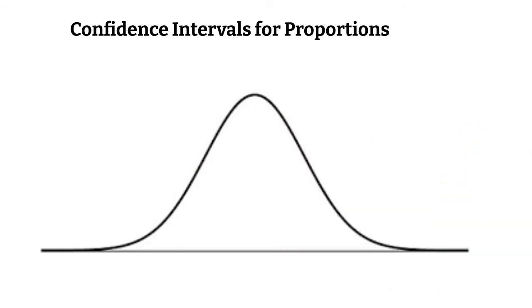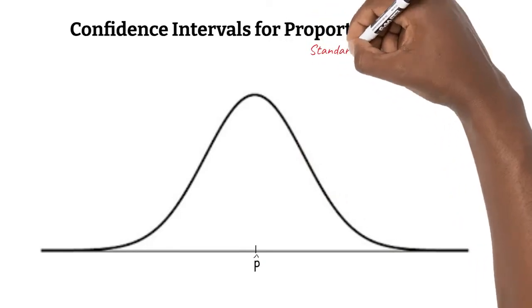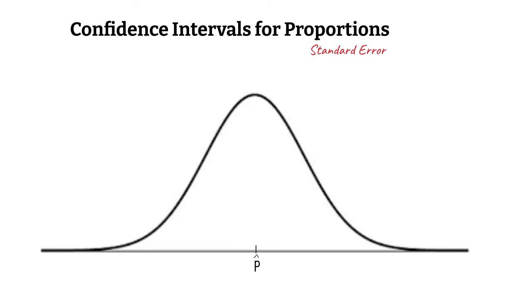Here's our normal curve. When we survey a sample, our proportion is placed here, at the center of the normal curve. We will be using standard error in place of standard deviation, since the average proportion is not in the center.